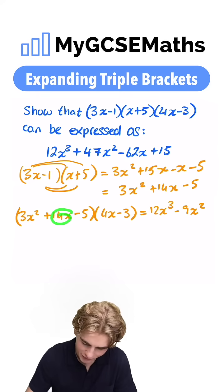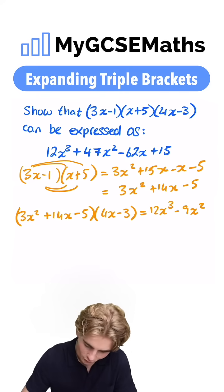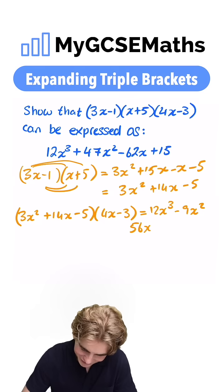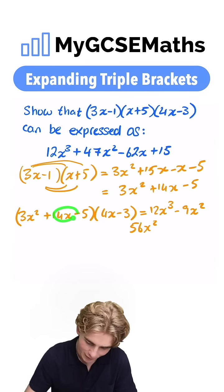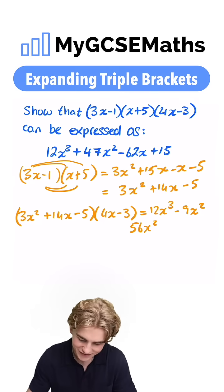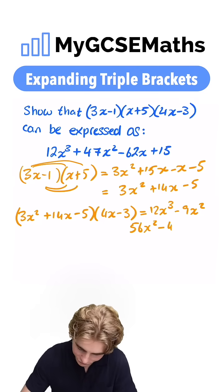Next, we have our 14x times by our 4x. 14 times by 4, that's gonna be 56, so we have 56x squared. Next up, 14x times by 3. 14 by 3 is 42, so we're gonna have minus 42x.